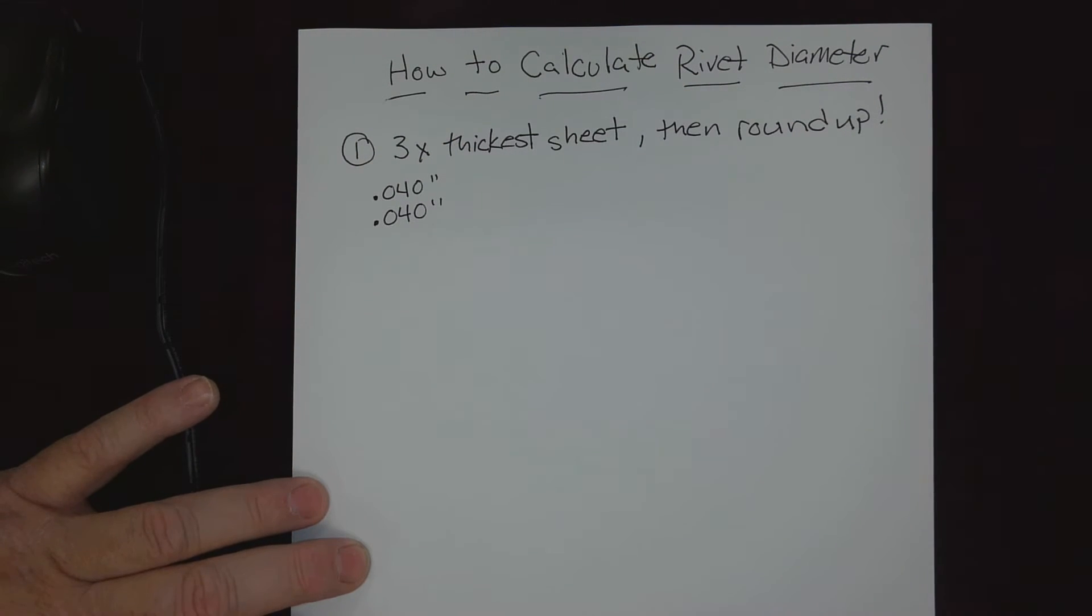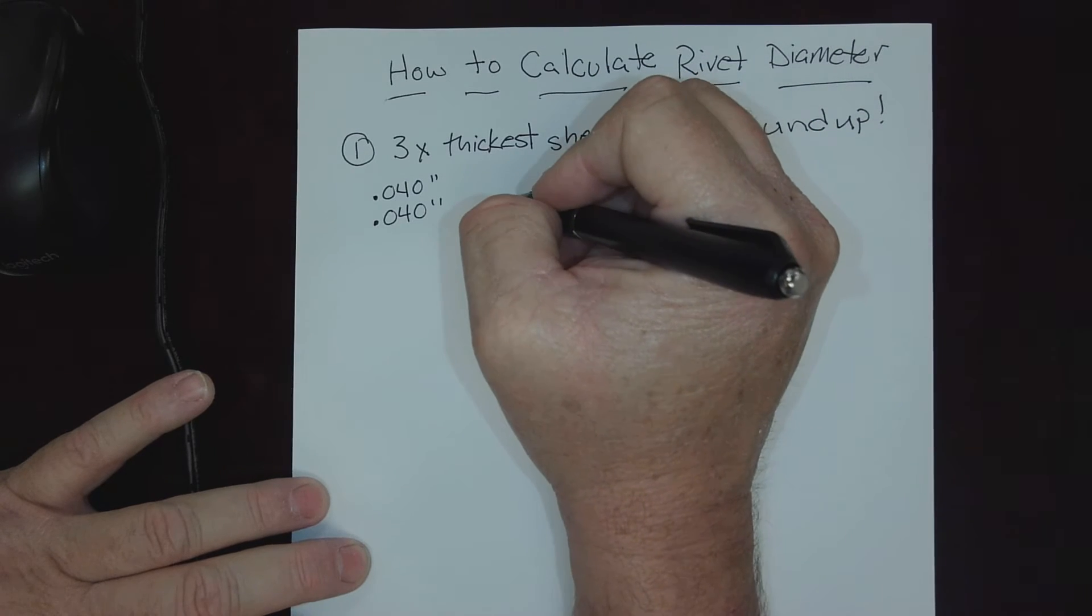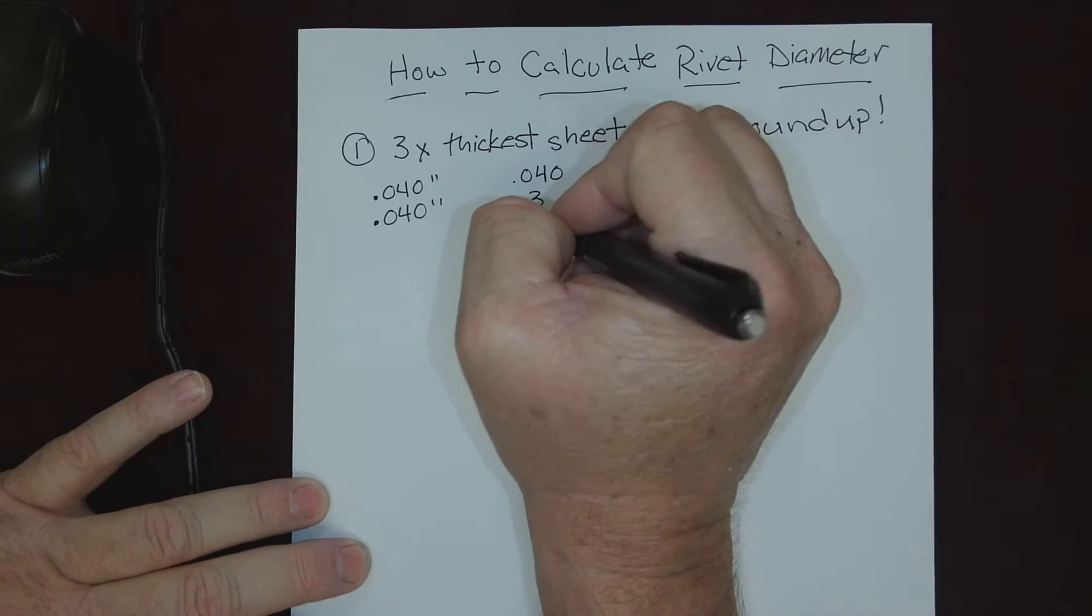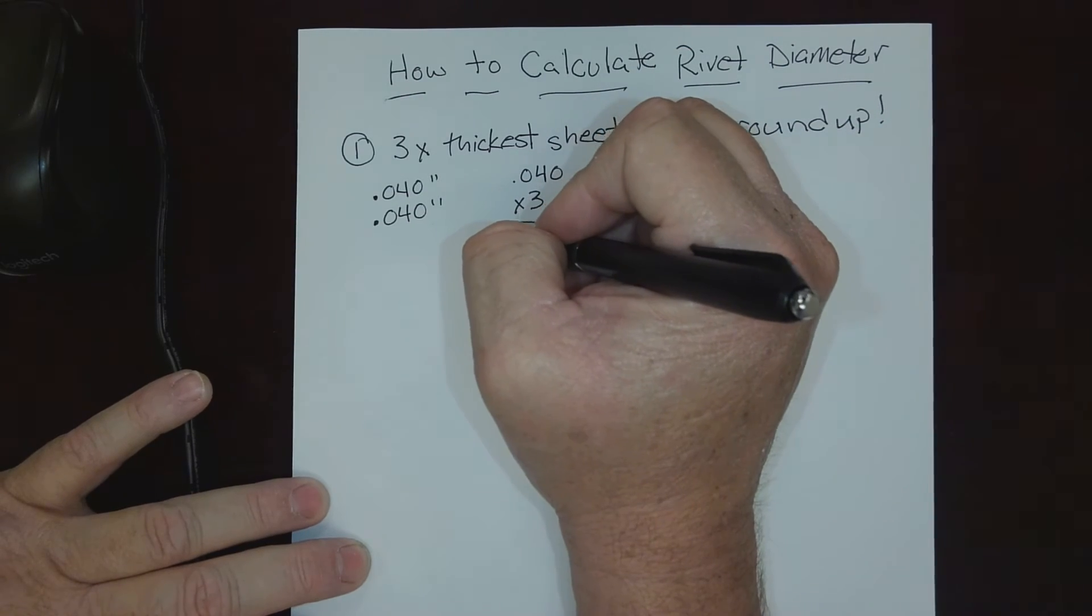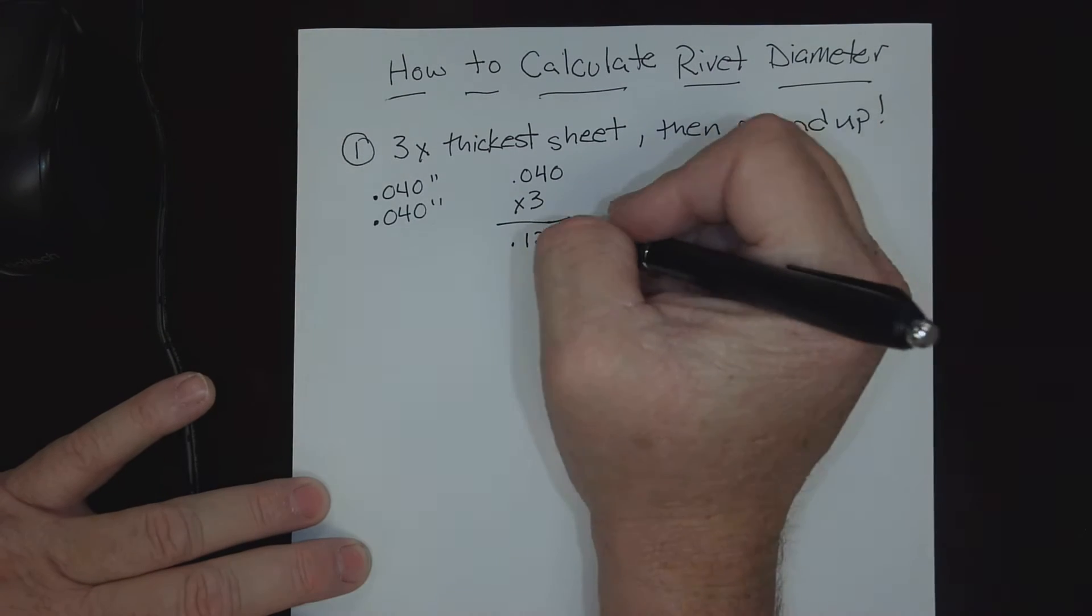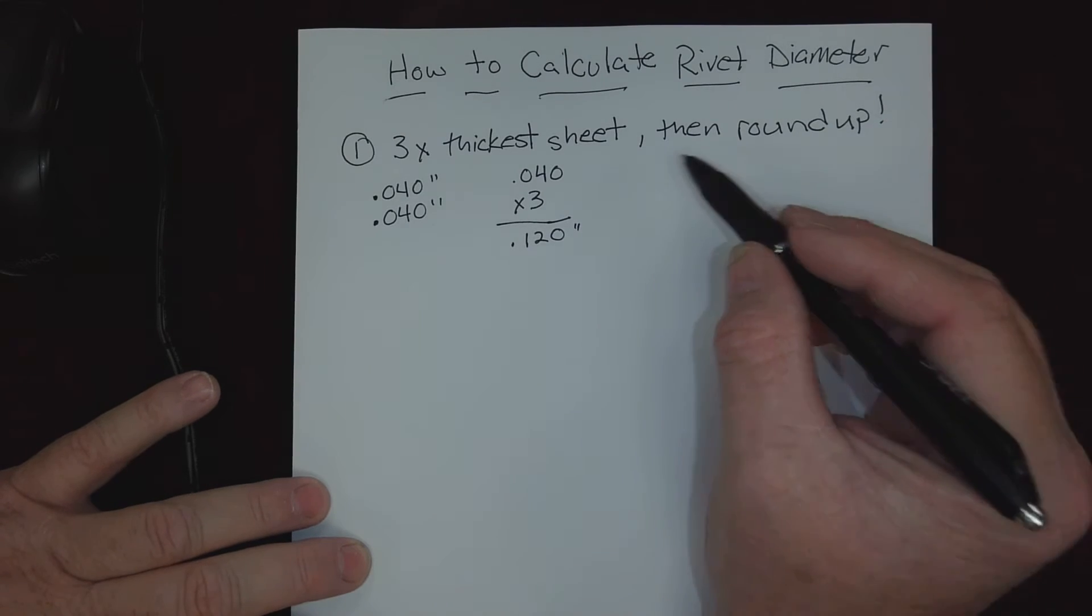Well, let's apply this rule. We'd say three times the thickest - well, they're the same so it doesn't matter. So three times the thickest, that would be three times forty, which would equal one hundred and twenty thousandths of an inch. So that takes care of the first part of this rule.